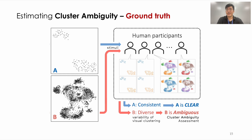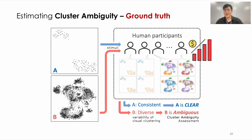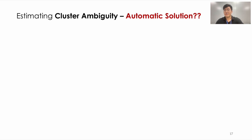The way of estimating ground-truth cluster ambiguity is simple. As cluster ambiguity refers to human perception's potential variability in visual clustering, we can estimate it by conducting a user study. By asking people to conduct visual clustering and checking the inconsistency, we can obtain ground-truth cluster ambiguity. However, this strategy is inefficient and not scalable — we need a lot of money and time to recruit participants and conduct a study. Thus, we developed an automatic solution, which we call CLAMS.